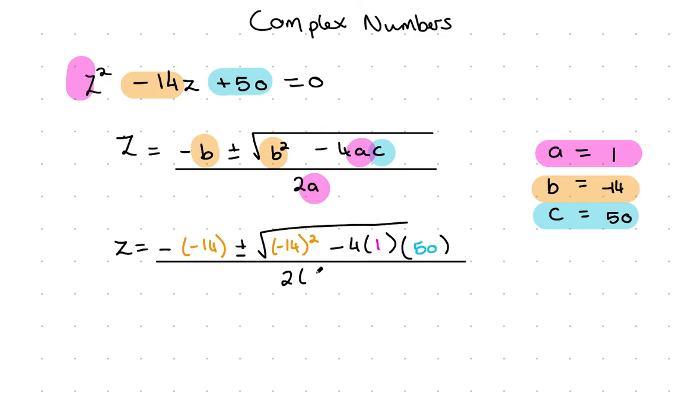I'm going to tidy things up. Z equals minus times minus 14, which works out to plus, then plus or minus the square root of 14², which is 196.